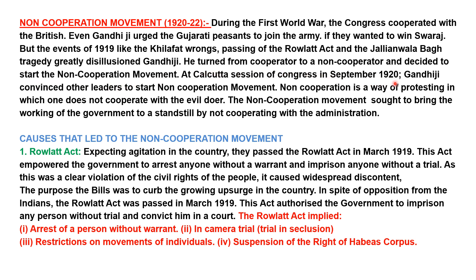At the Calcutta session of Congress in September 1920, Gandhiji convinced other leaders to start the non-cooperation movement. Non-cooperation is a way of protesting in which one does not cooperate with the evil doers — especially the British. The non-cooperation movement sought to bring the working of the government to a standstill by not cooperating with the administration.